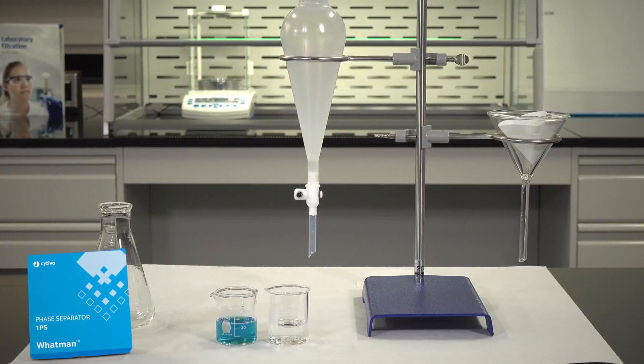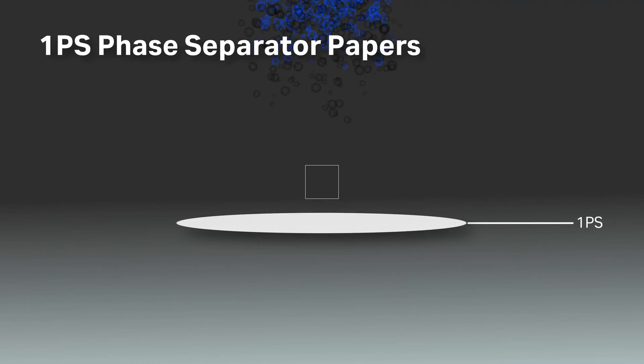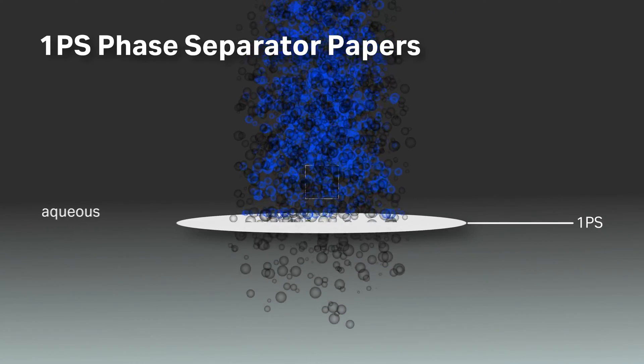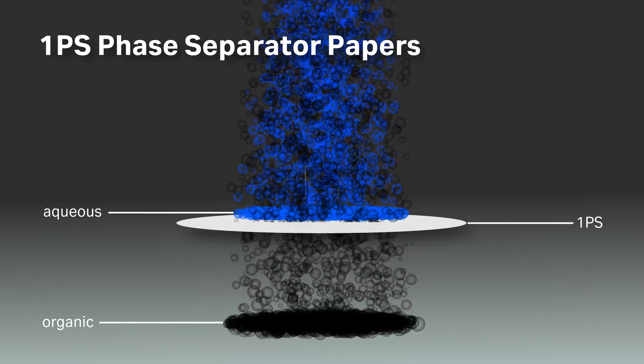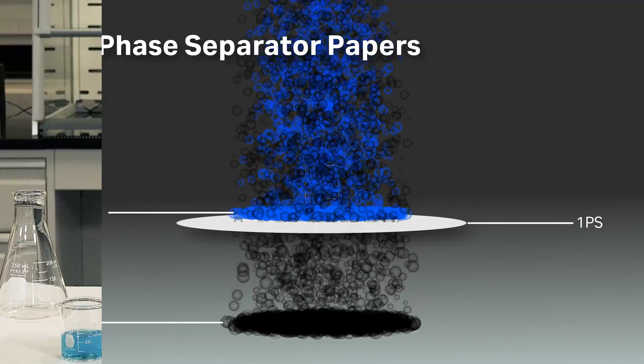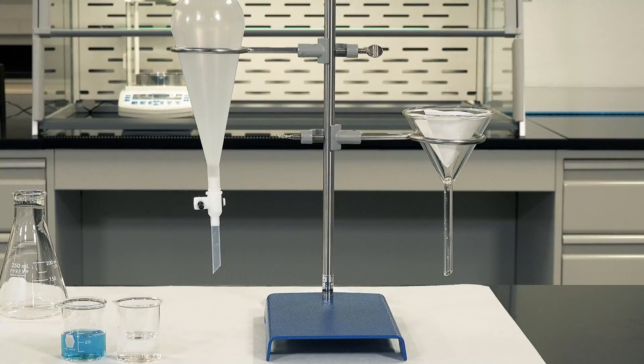However, the Whatman 1PS phase separator papers from Cytiva avoid the use of a separatory funnel to reduce the number of steps for a more cost-effective, rapid solvent extraction. Let's focus on what's the difference between these two processes.